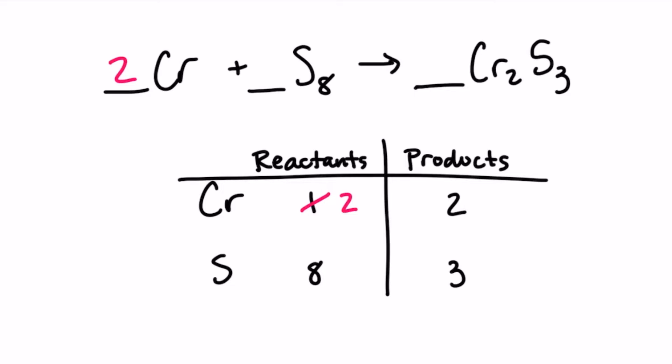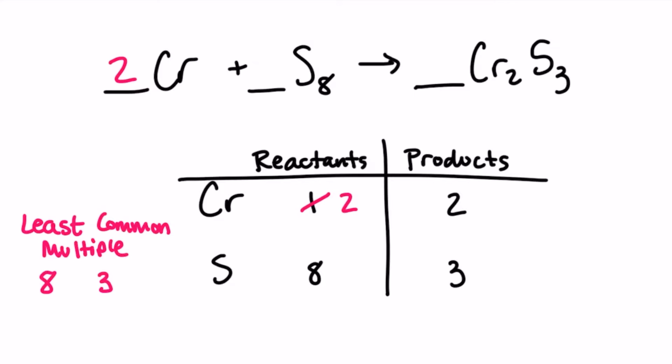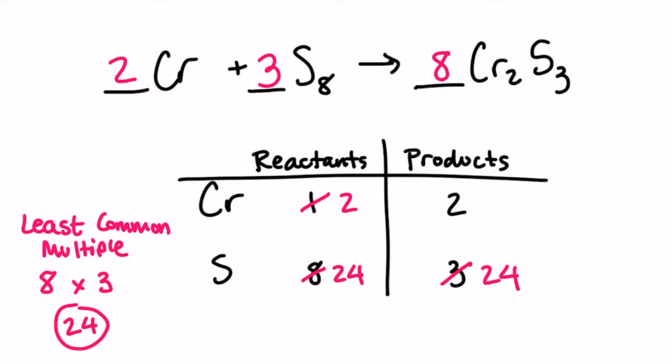Now I have to find my least common multiple between eight and three. The easiest way to try and get a least common multiple is to multiply the two numbers together. It doesn't always work, but you'll at least get a common multiple and then you can reduce it later. In the best case, you get the least common multiple. So eight times three is 24. If I add a three coefficient in the reactant, three times eight is 24. And I add an eight coefficient in the product, eight times three is 24. Then that balances the sulfur.